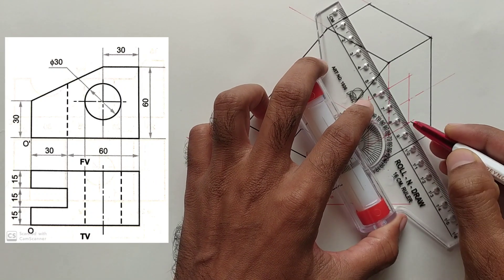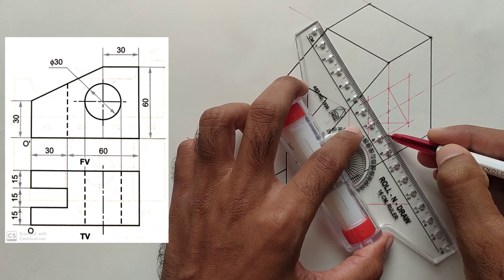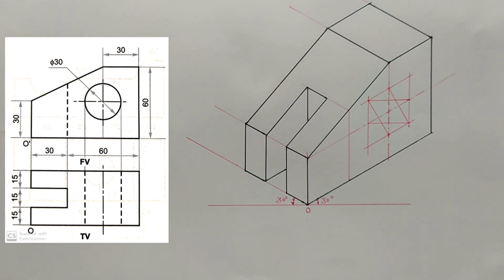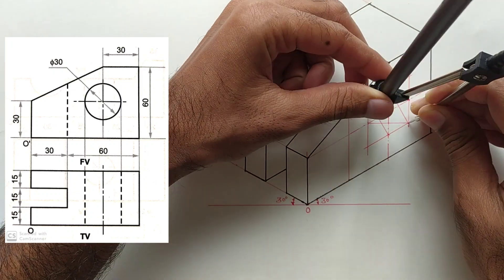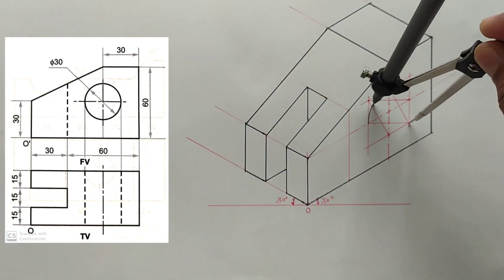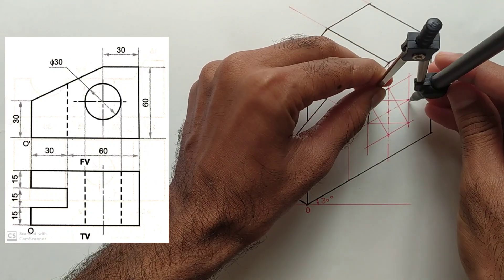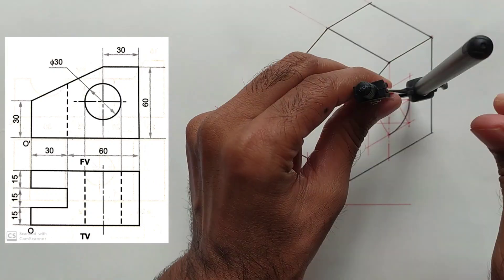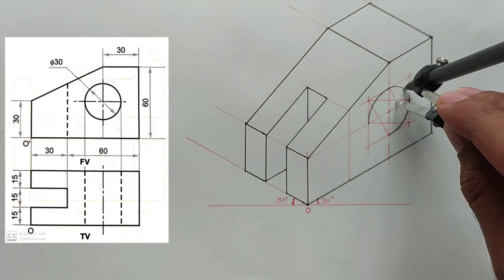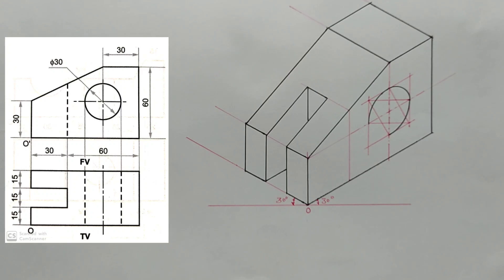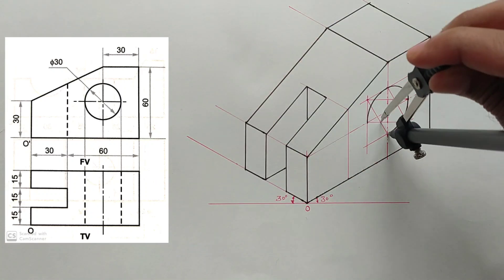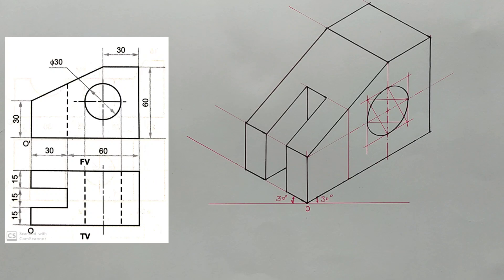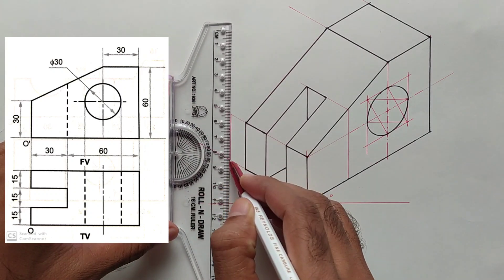We have constructed the isometric square. Now join the opposite midpoints from each obtuse angle. Take this distance into the compass and join the two opposite midpoints, then do the same procedure for the other side. Take the small distance into the compass and join the remaining opposite midpoints the same way to complete the isometric ellipse.